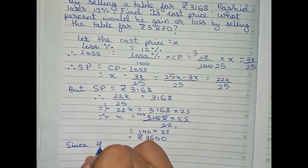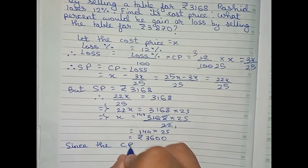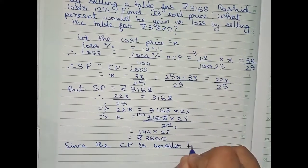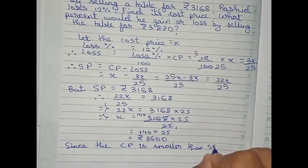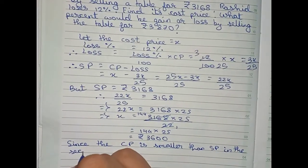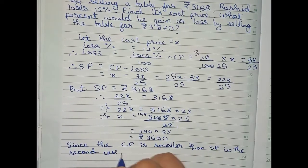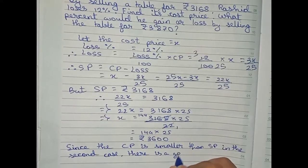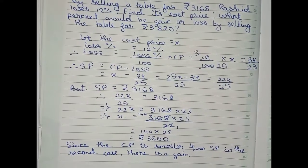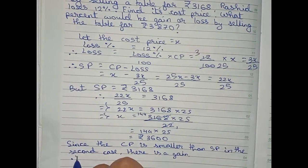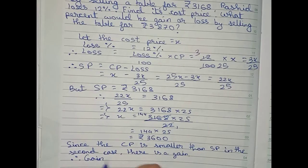Since the CP is smaller than the SP in the second case, there is a gain. In the second case, SP is rupees 3870 and CP is rupees 3600, so SP is greater than CP. Therefore there is a gain.